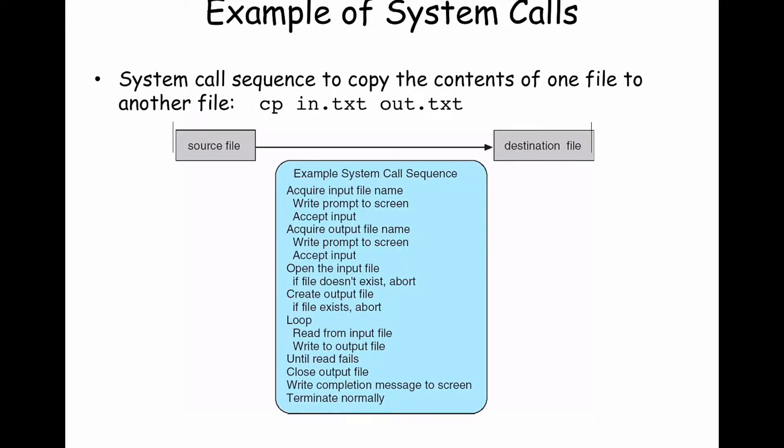Here's an example from the book showing all the different system calls involved in something very simple — even something like copying a file. On the command line, you might issue a command like cp in.txt to out.txt. The semantics of such a command: you have the command name cp, which is actually a program that's run. When you type this command and hit enter, the CLI takes these three pieces of text — cp, in.txt, and out.txt.